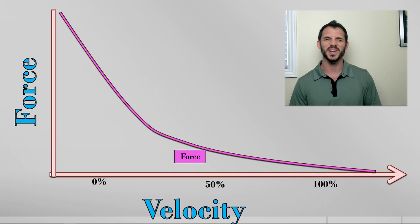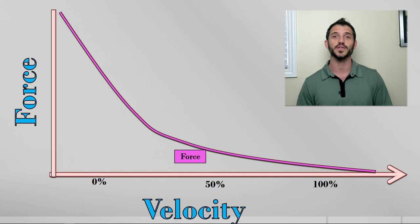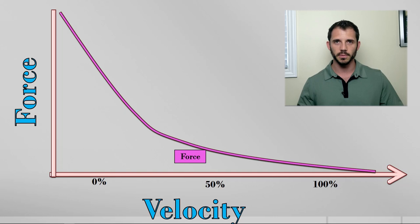So what you're seeing here again is called the force velocity curve. And it's very simple. The heavier something is, the slower you can move it. That doesn't take a neurosurgeon to figure that out. If I said tomorrow in class we're going to run a race, and whoever wins the race gets an automatic A in the class for the whole year, and you have to wear a backpack. And that backpack can be filled with five pounds, 50 pounds, or 500 pounds. You would all obviously pick the five pounds.